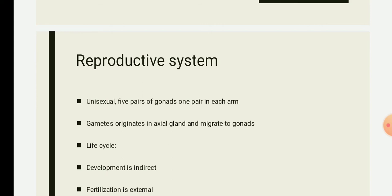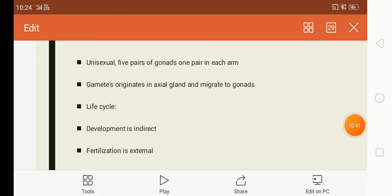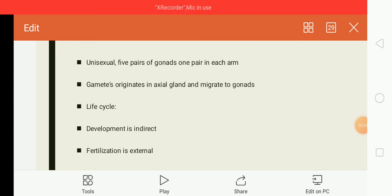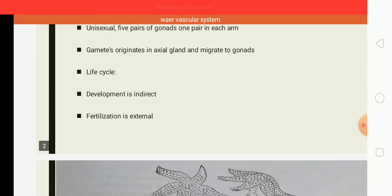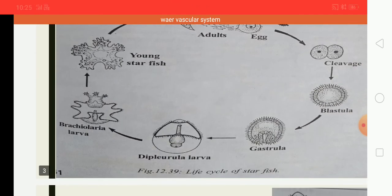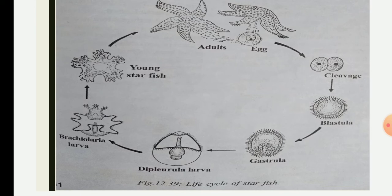Fertilization is external — it occurs in the sea — and the fertilized egg is called a zygote. This is a simple diagrammatic view depicting the life cycle of the starfish: the adult starfish releases gametes, eggs and sperm, into the environment, and in the sea water they fuse to form a zygote.